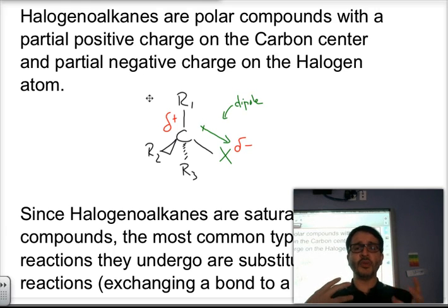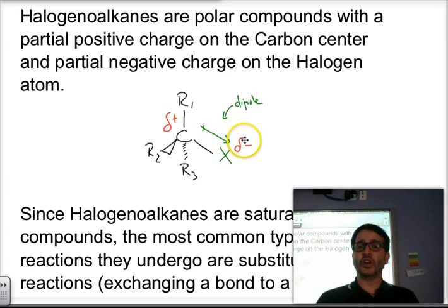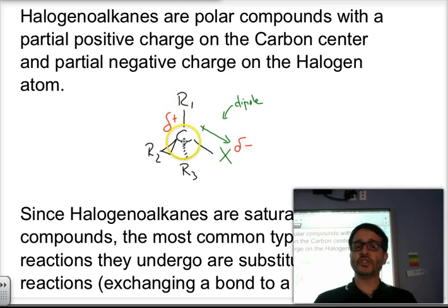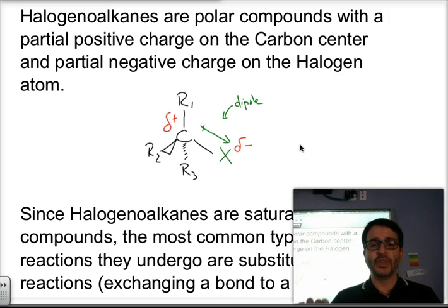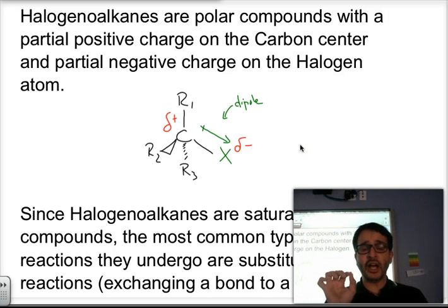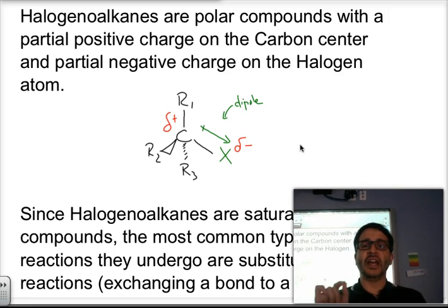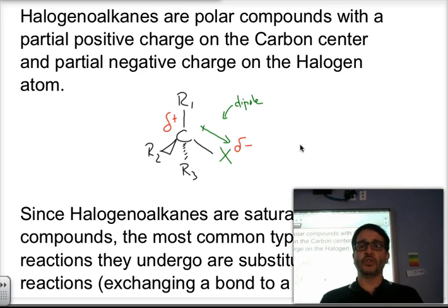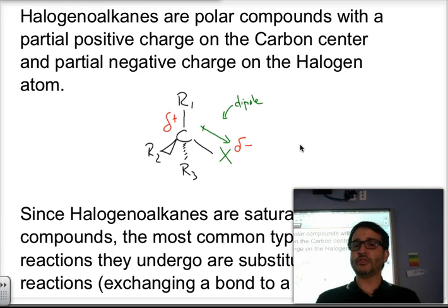Because of the carbon-halogen bond being polar, we're going to have a partial negative charge on the halide and a partial positive charge on the carbon atom. It is that carbon partial positive charge that is going to make it much more reactive than alkanes. Being saturated, the type of reactions that occur in halogealkanes are substitution reactions, in which we replace one existing bond for another bond.